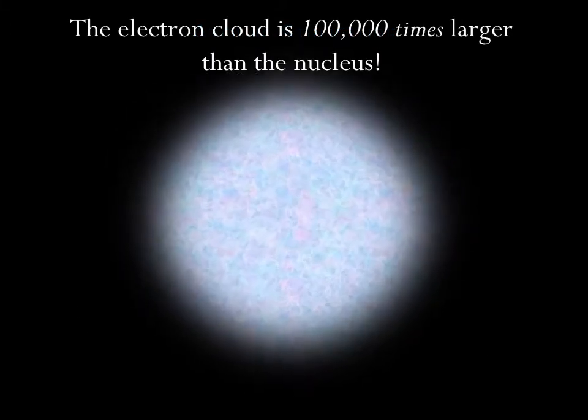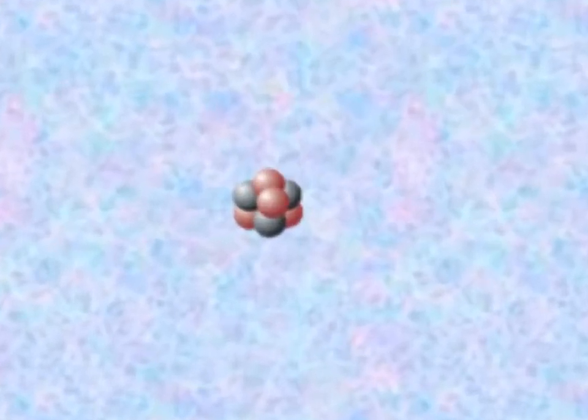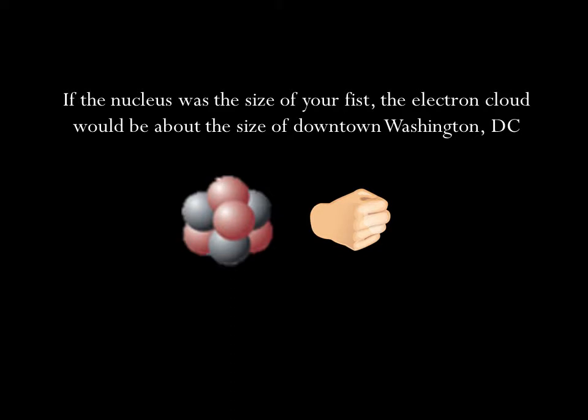The electron cloud is much, much larger than the nucleus. Really, really much larger. If you imagine an atom on a scale where the nucleus is blown up to be about the size of your fist, then the electron cloud is about the size of downtown Washington, D.C.